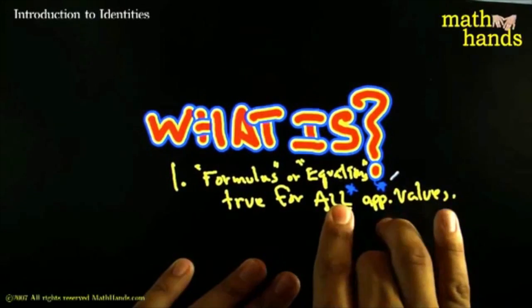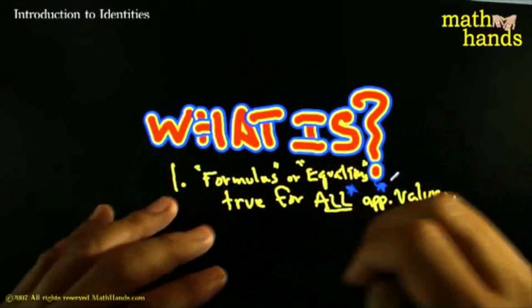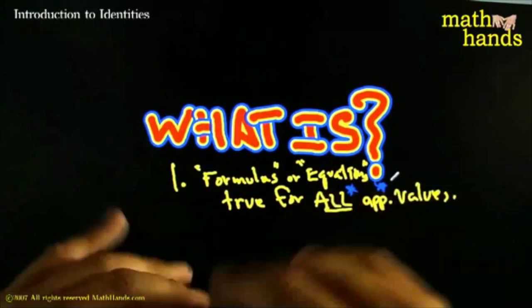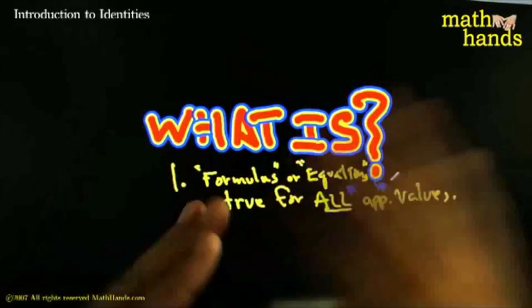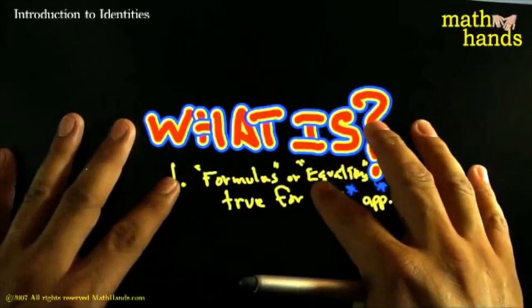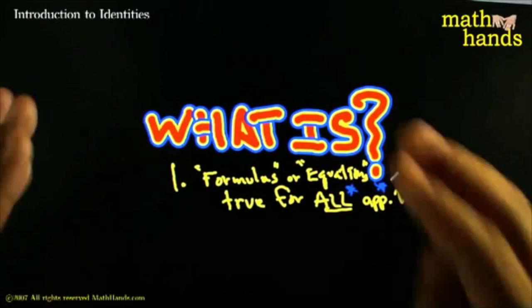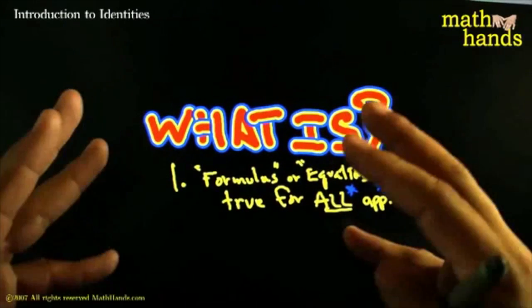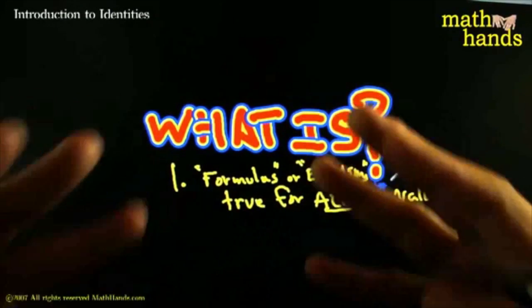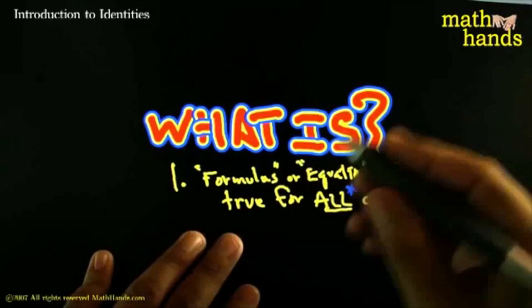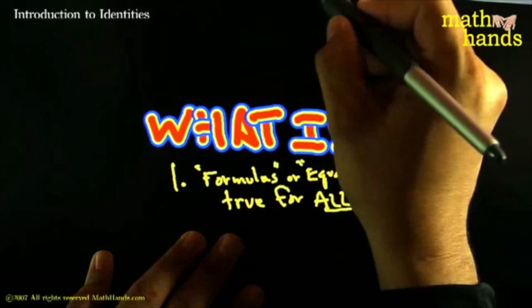And again, I've got to explain more about all because there's some little minor exceptions. But I don't want to go down that road right now. So this is a good, very strong and very well-founded way to think about identities. Identities are equations that are true for all possible values of x.